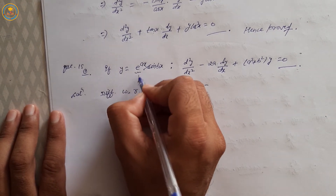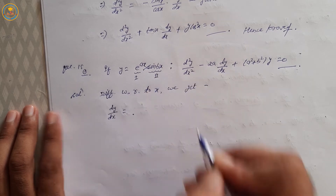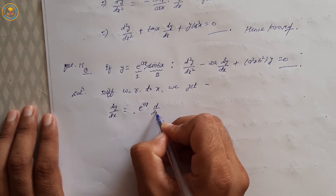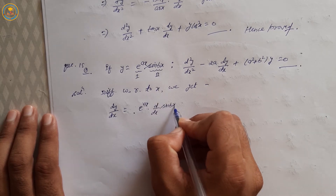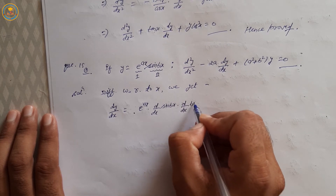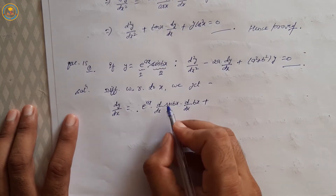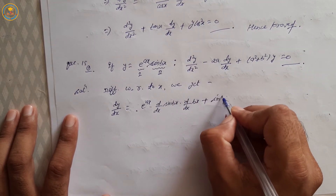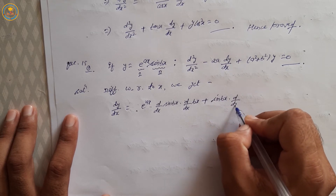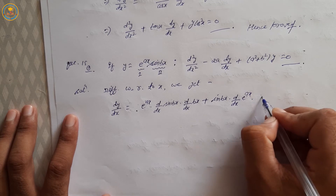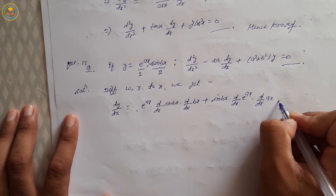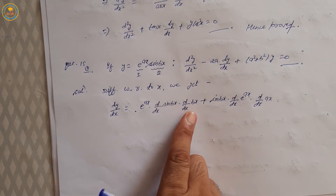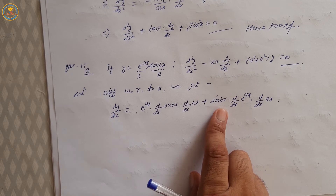Using the product rule: first function e^(ax) same, into dy/dx of sin(bx), plus second function sin(bx) same, into dy/dx of e^(ax). First derivative of sin, second derivative of bx, plus second function same into differentiate of first.